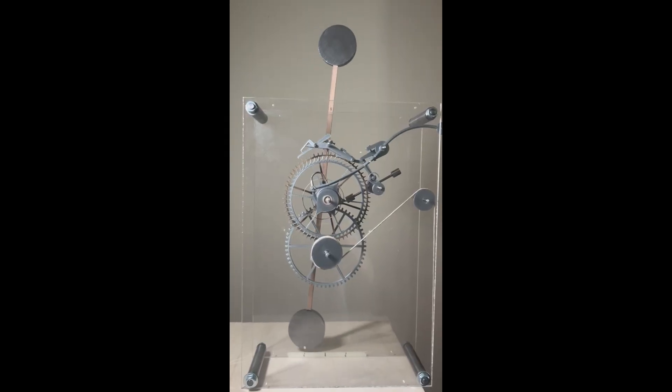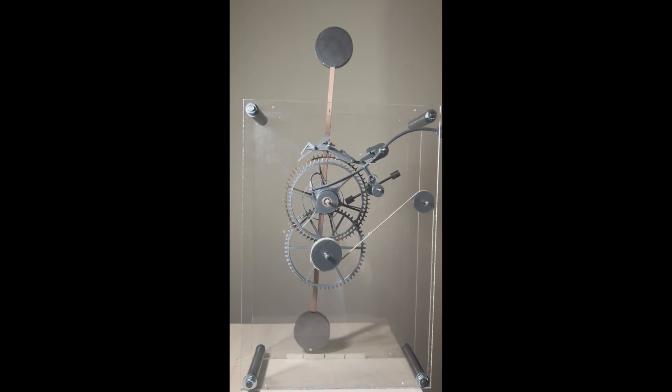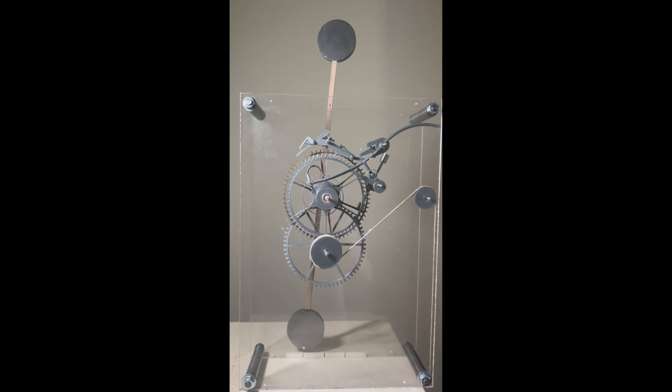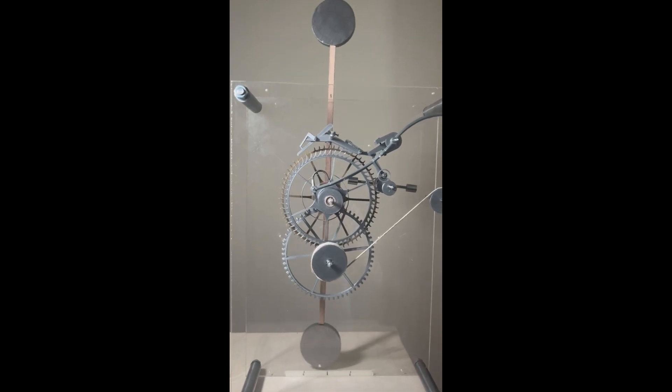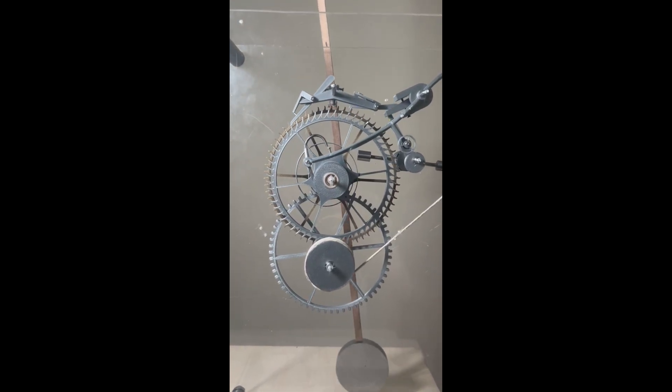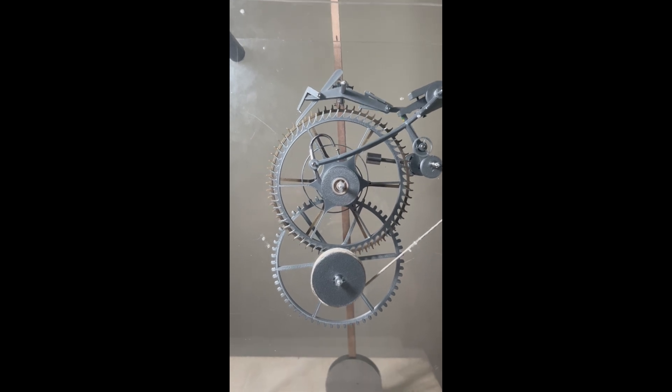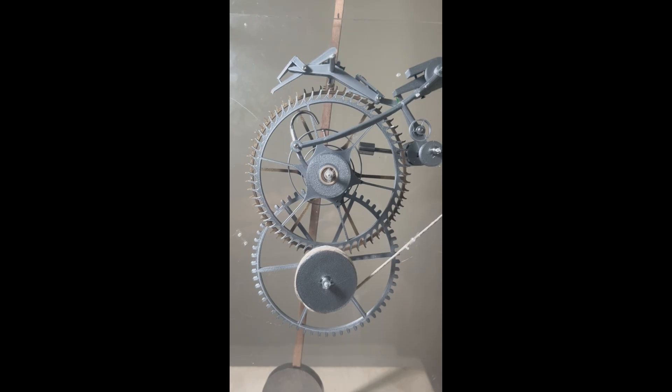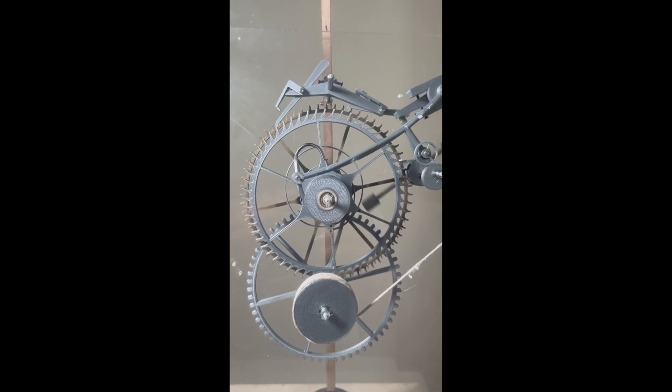The first thing I wanted to try and do was to design a grasshopper escapement and link this up to a Harrison style remontoir. So I made this 3D model and I really liked the way it looked, particularly the escape wheel and its action on the grasshopper escapement.